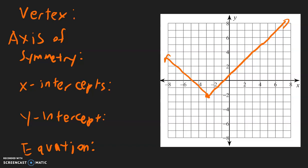So for this example, let's go over each of these items. The vertex is just where the V turns around. For this example, it will be right over here, and this coordinate is at negative 3, negative 2. So that's the vertex: negative 3, negative 2.